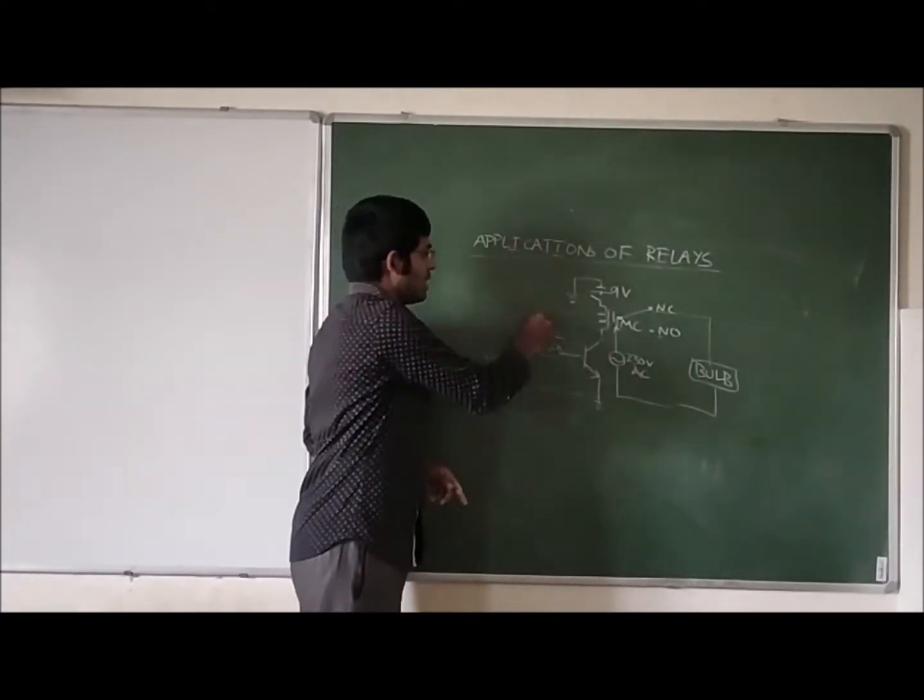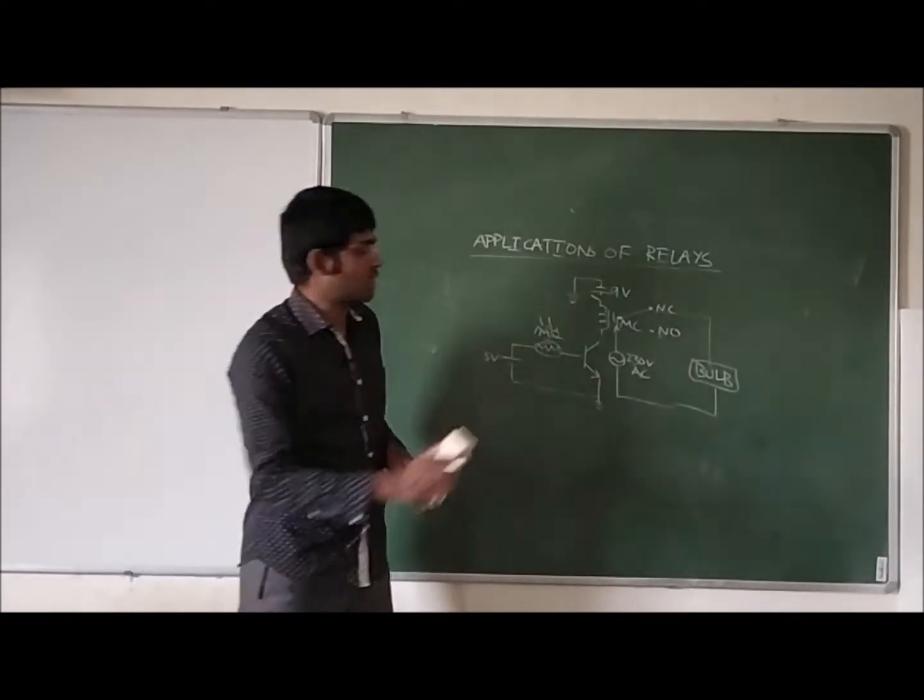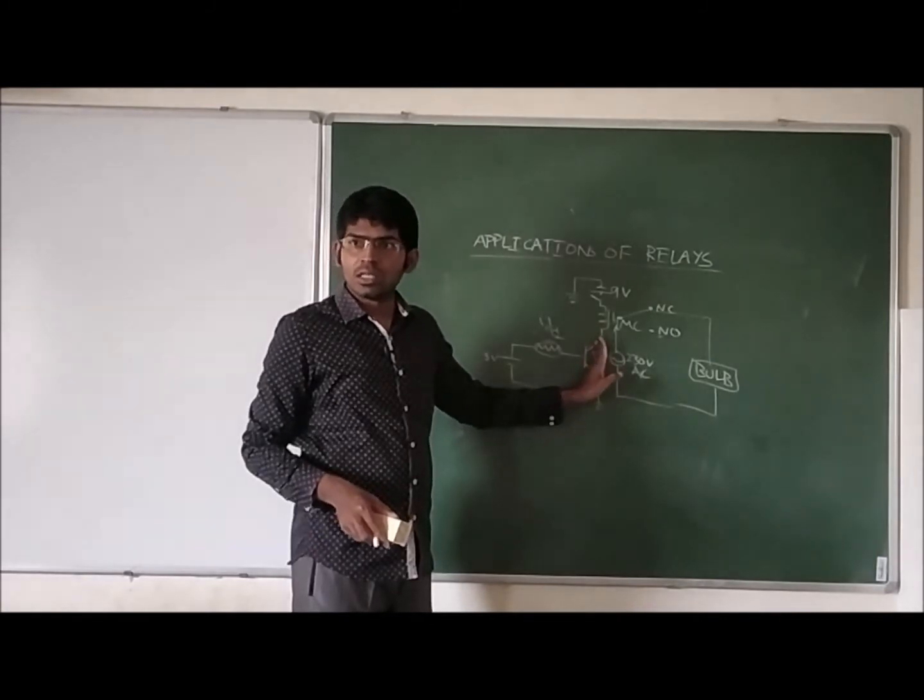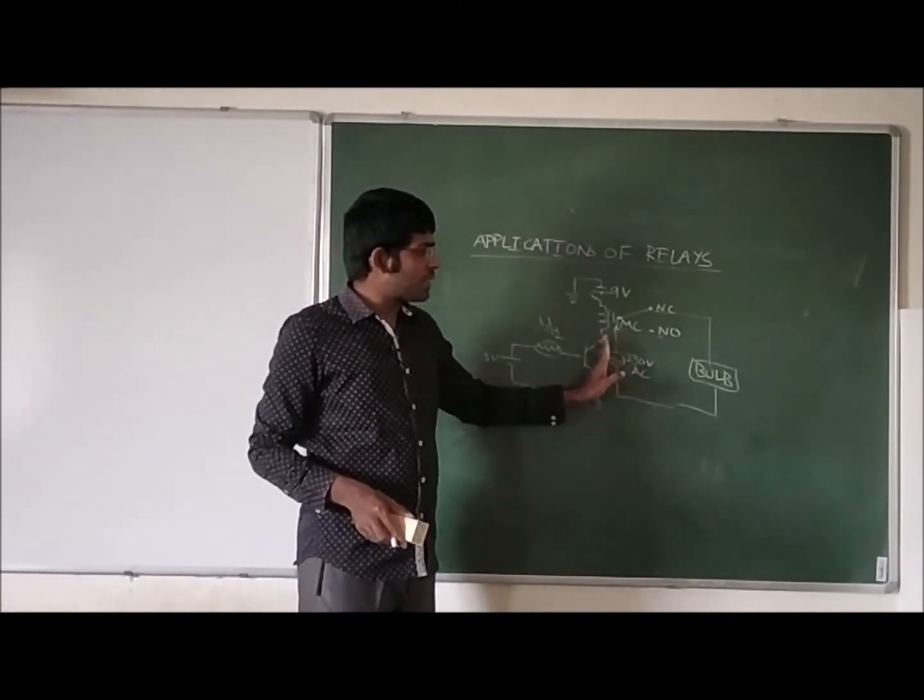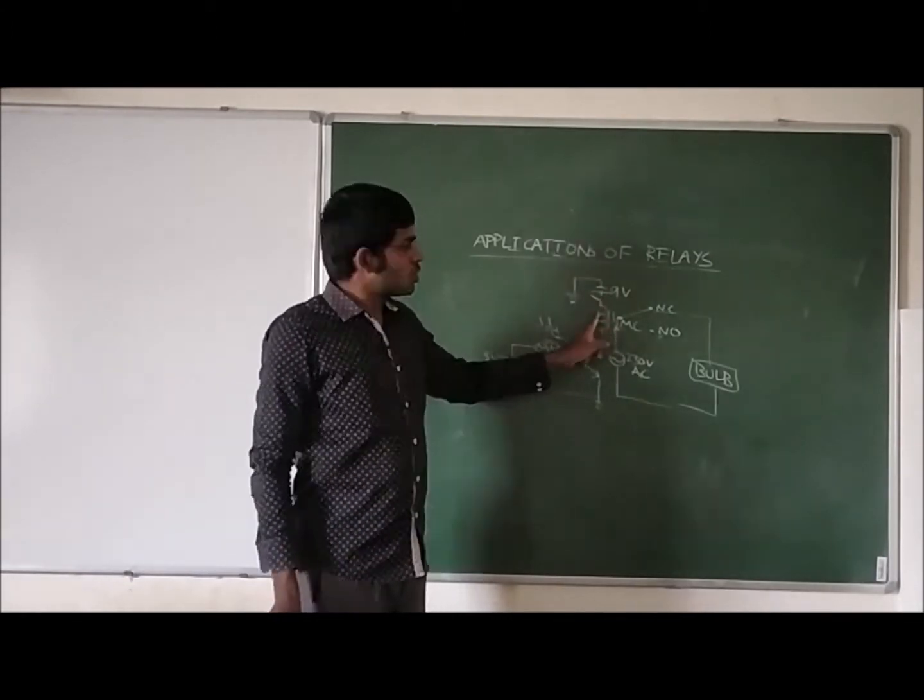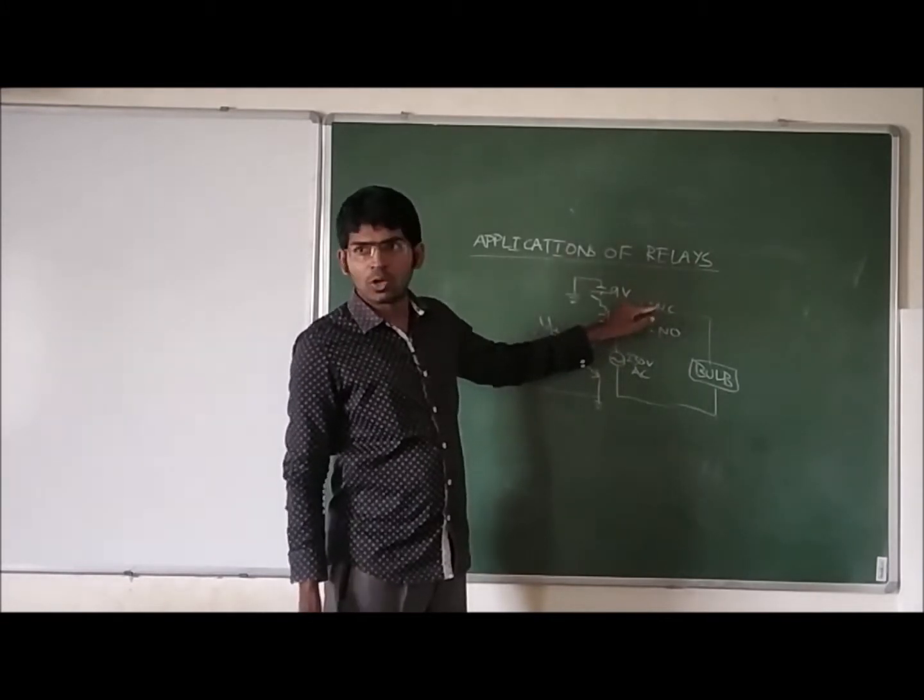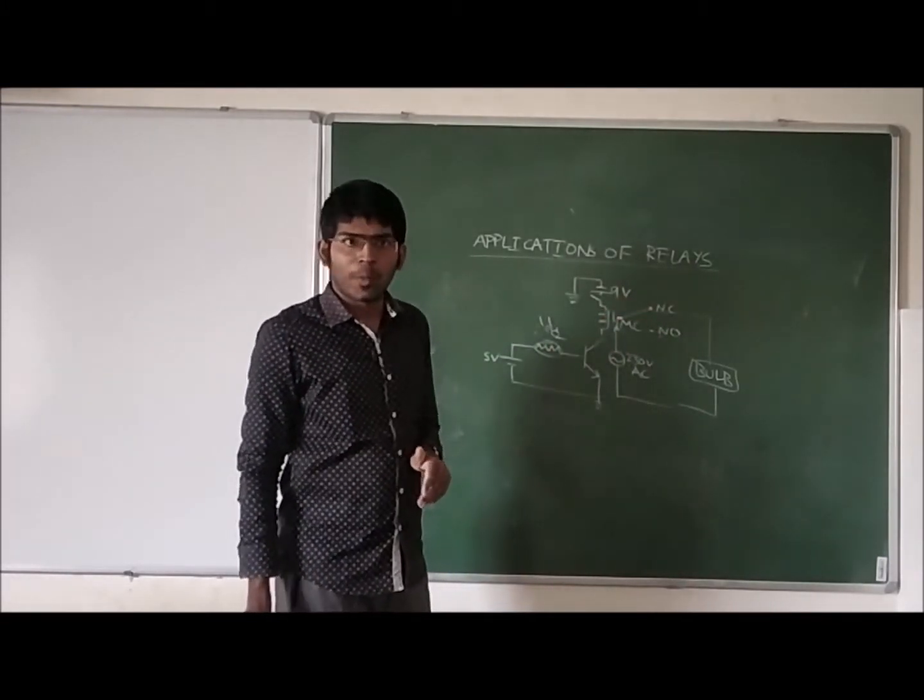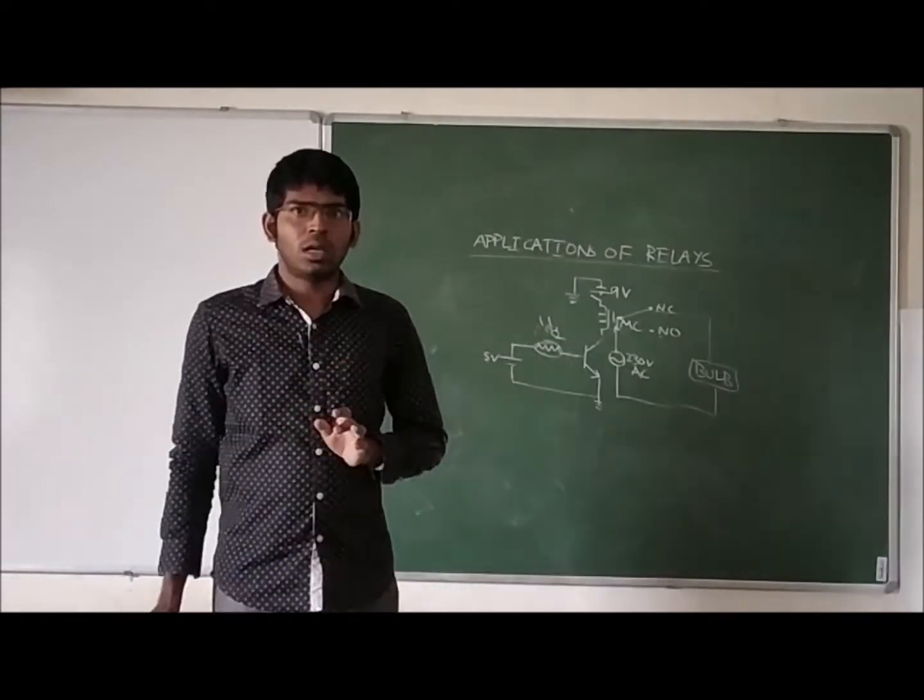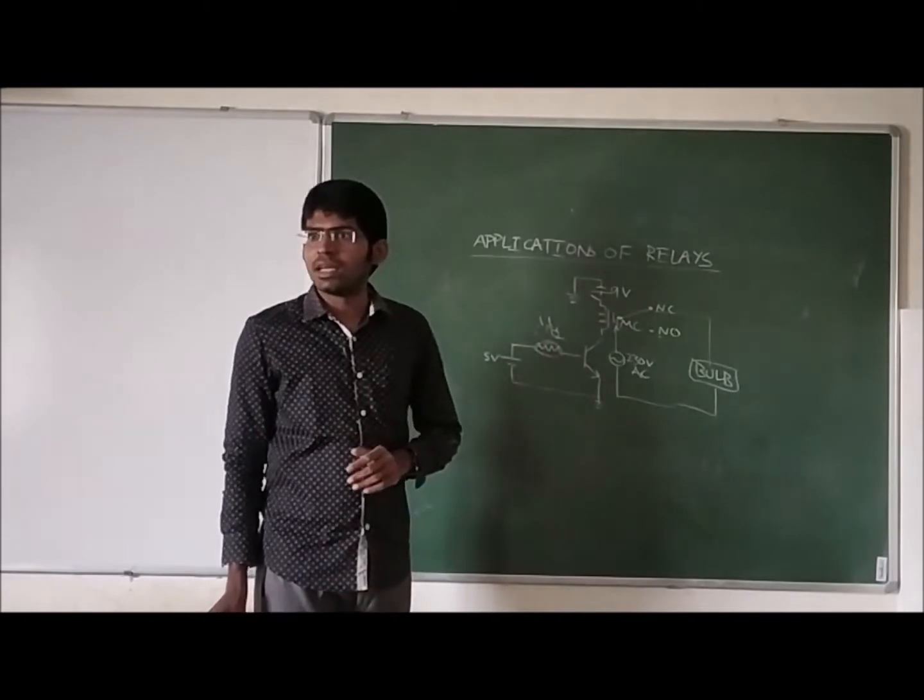Now when light falls on the LDR, it offers very few ohms of resistance. So 5 volt supply will be given to the transistor. Transistor is in on condition. Because the transistor is on, current flows in the relay coil. Because of the current in the relay coil, the magnetic field attracts the armature frame from normally closed to normally open. So the bulb will be automatically turned off. This is the application of relay we use in automatic systems like street lights.